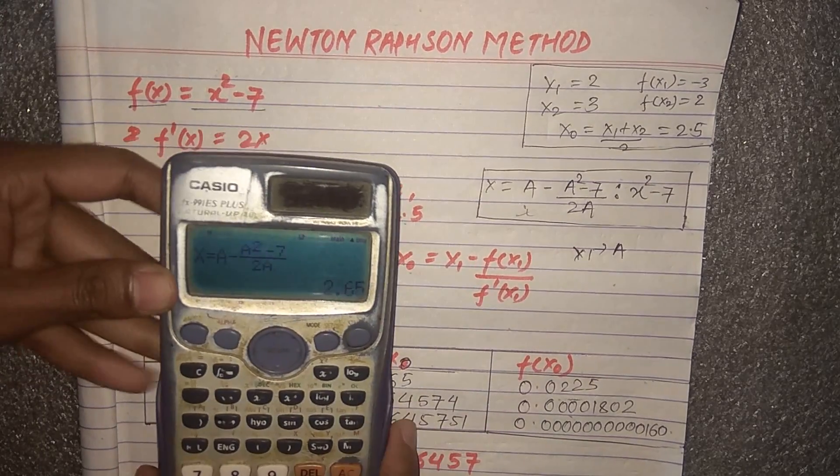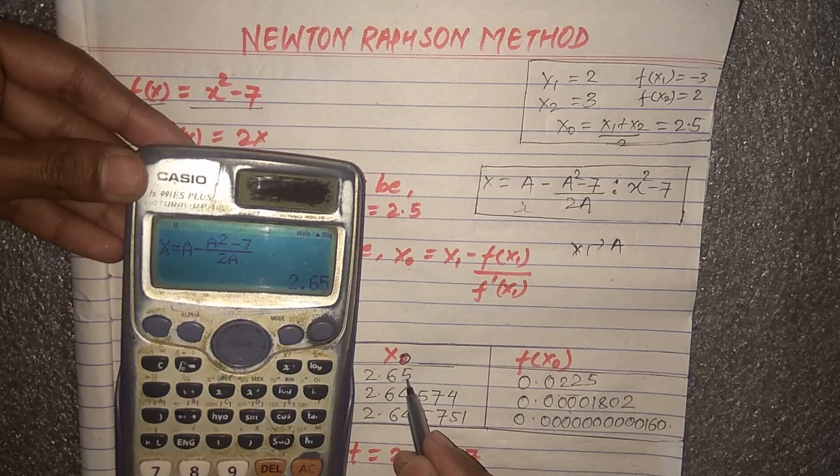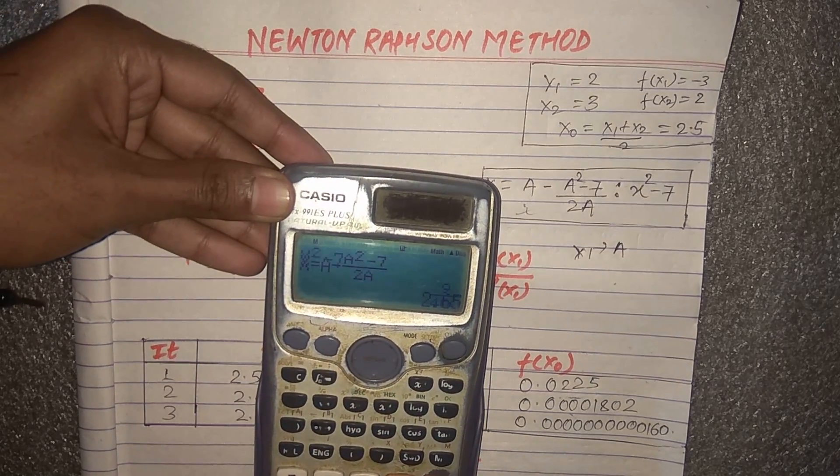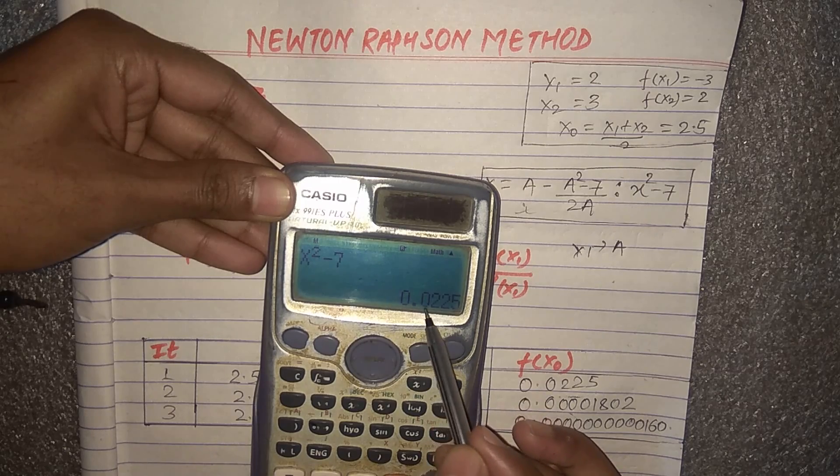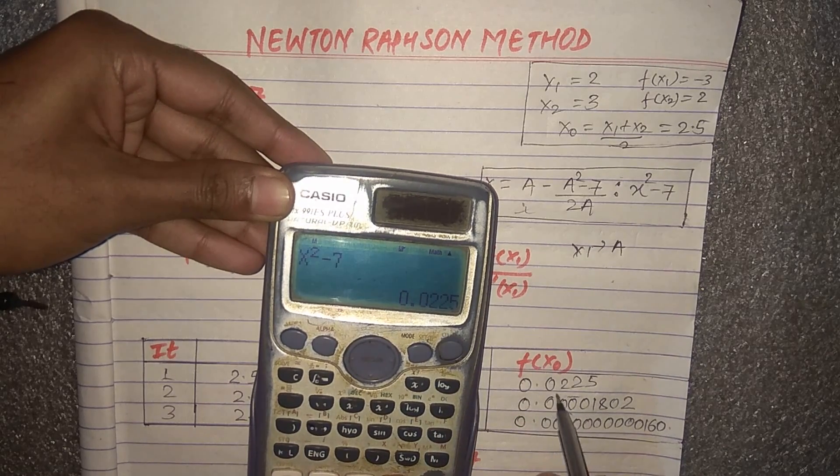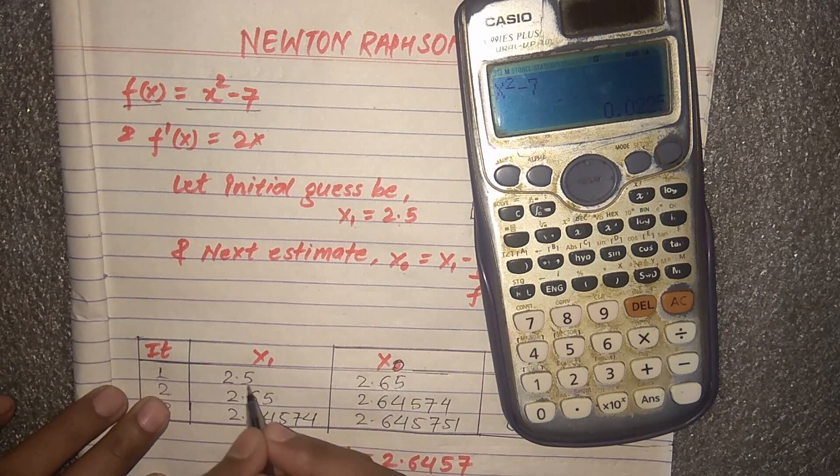So we get next estimate x₂ = 2.65. The functional value we get, x² - 7, equals 0.0225.